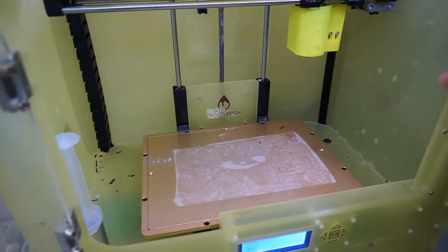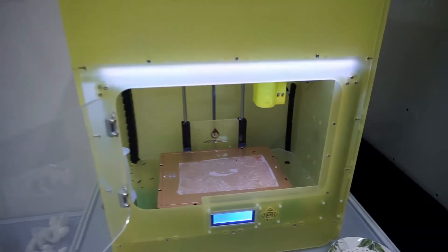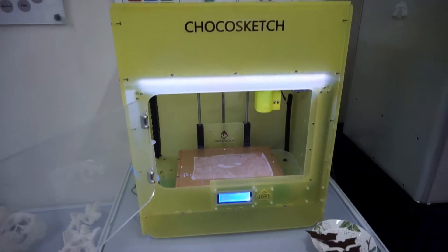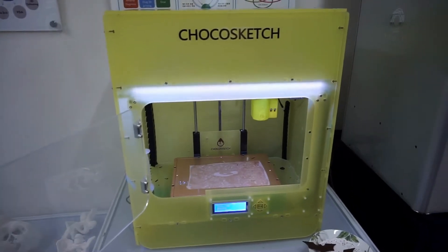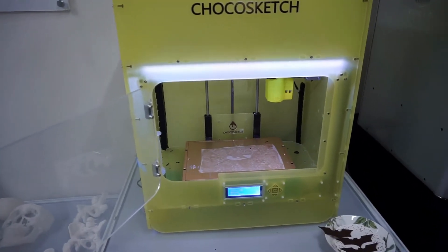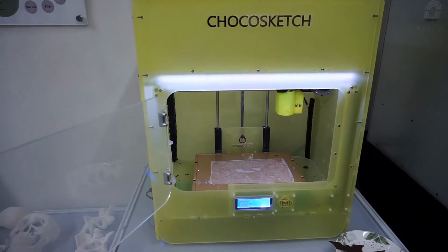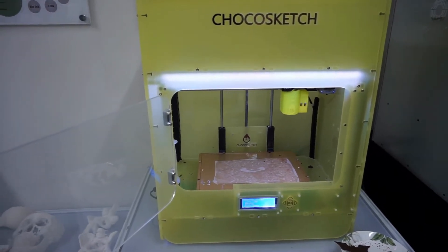Depending on the country that you are in, the price might change a little bit. It goes around $2100 and each pre-filled syringe for around $5. Thanks a lot to Rokit for welcoming us to their headquarters and letting us take a look into their 3D chocolate printer.